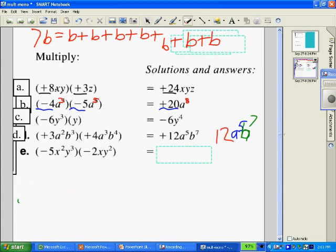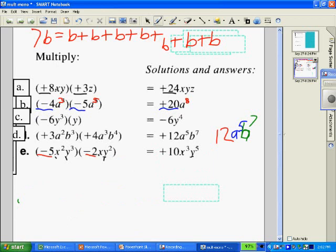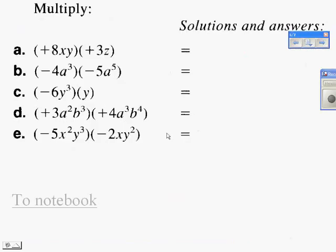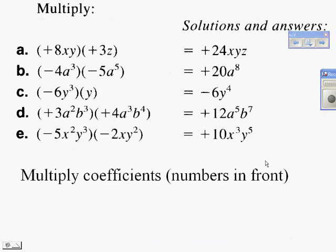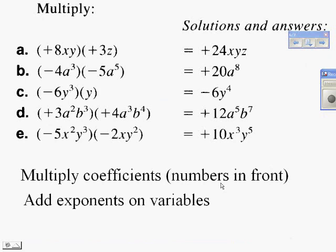Looking at (e), again multiplying our coefficients: negative times negative is positive, 5 times 2 is 10. Then you have 2 factors of x and another factor of x, giving 3 factors of x altogether. 3 factors of y and 2 factors of y gives you 5 factors of y. The factor of negative 5 and the factor of negative 2 is why you get an answer of positive 10. So those are all the answers. What we wrote at the bottom is that you're multiplying your coefficients and adding the exponents on the variables.